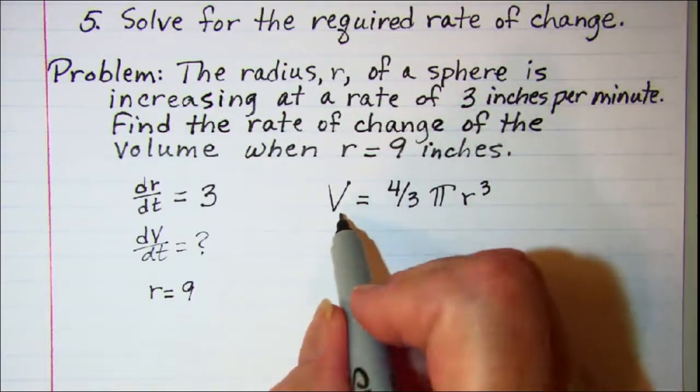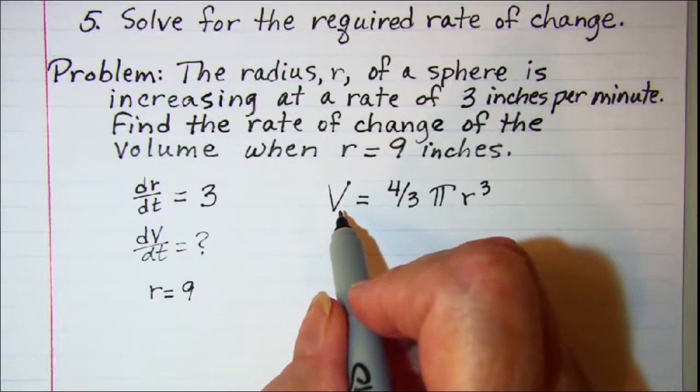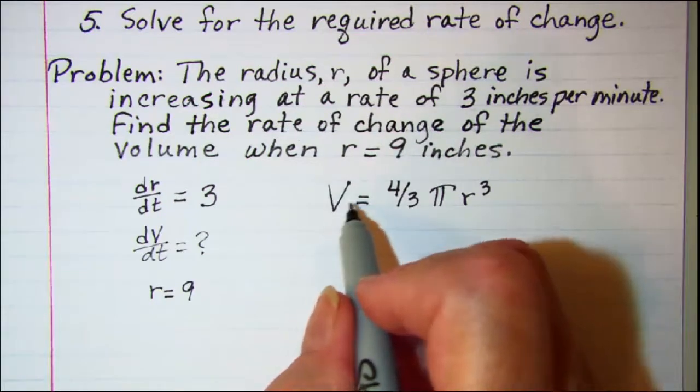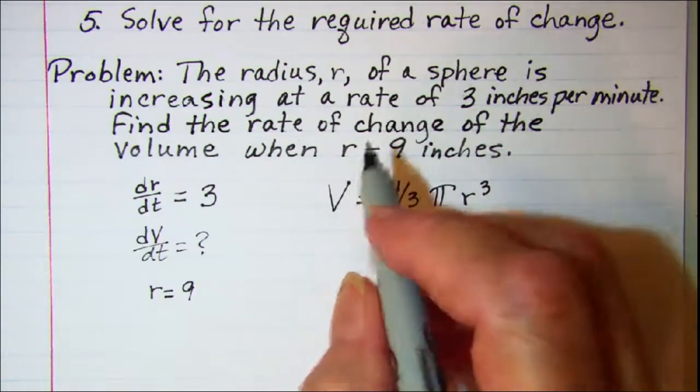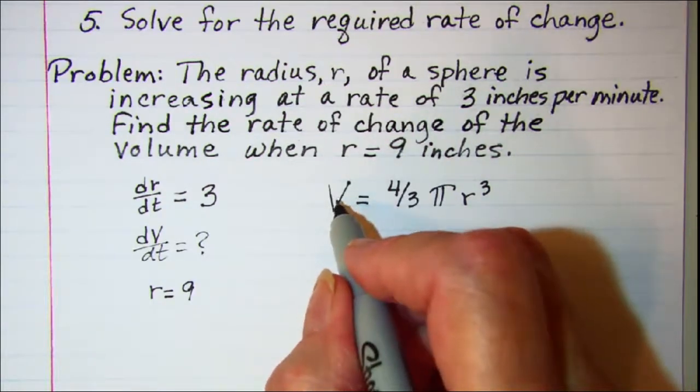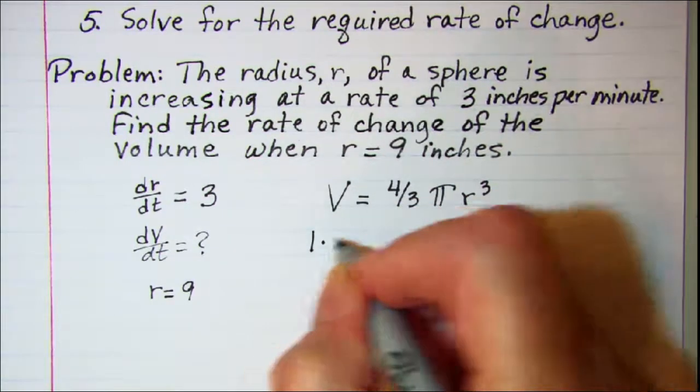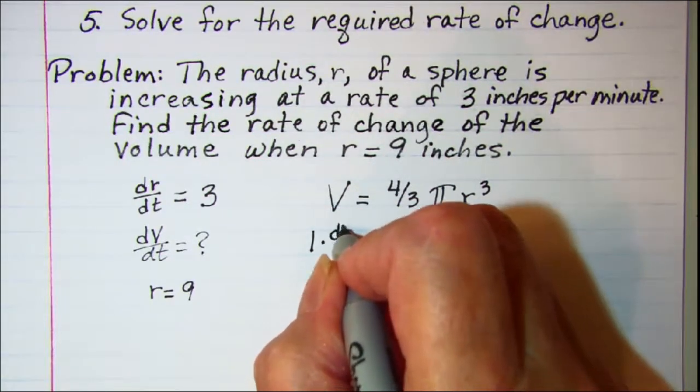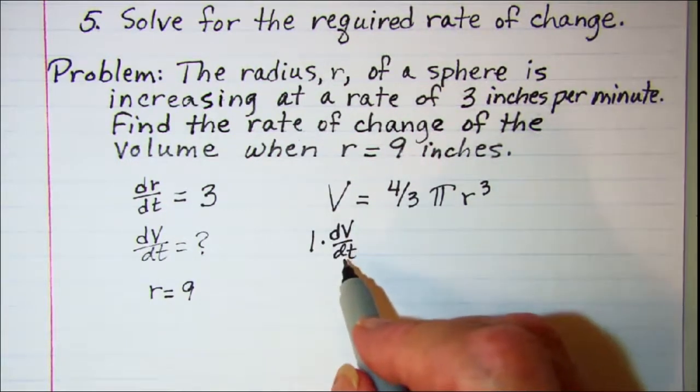So when we differentiate implicitly with respect to time, we do the derivative of each of the variables and then multiply by that rate of change. So for V, the derivative of V is 1 and then multiply that by dV/dt, and all of them will be with respect to time, equals